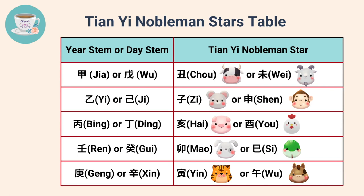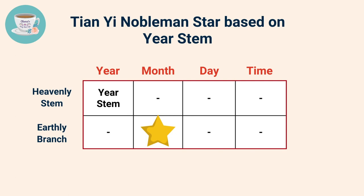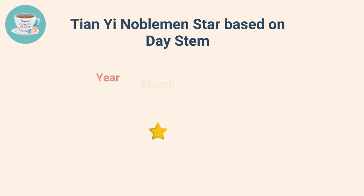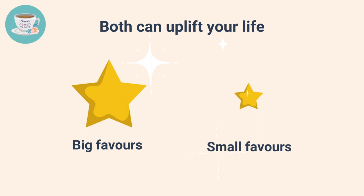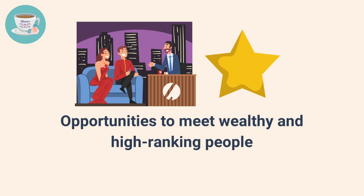If you have found your Nobleman star using your year stem, this Nobleman star is a big one. If you found your Nobleman star based on your day stem, then this Nobleman star is a small one. No matter whether it's a big Nobleman star or a small one, they both have the same effects to help uplift your life. The big stars represent big favors while small stars represent small favors. Tianyi Nobleman star also represents wisdom and opportunities to meet wealthy and high-ranking people.